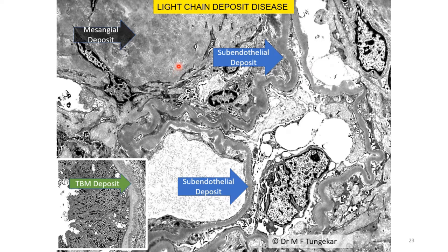Light chain deposition disease is another example of MGRS, where usually monoclonal kappa light chain — or less commonly lambda light chain — is deposited in various glomerular compartments: in the mesangium as well as in the subendothelial layer, in the form of a powdery granular material. To emphasize that electron microscopy of the kidney biopsy is not limited to glomerular abnormalities: in this condition there are also deposits of similar material in the tubular basement membrane.